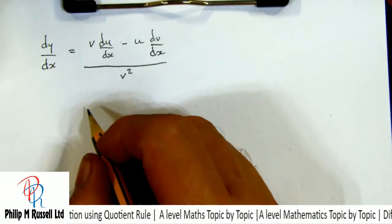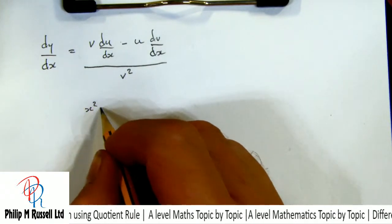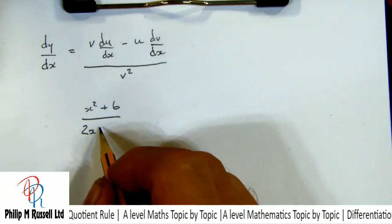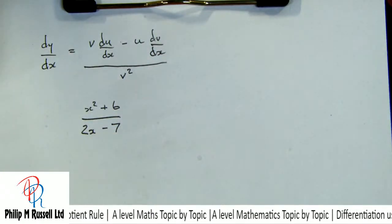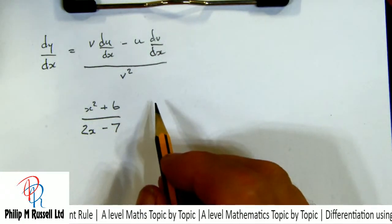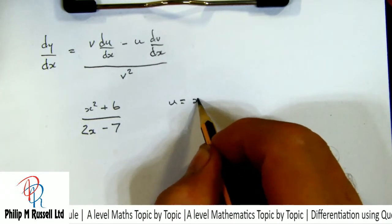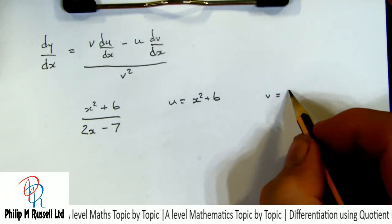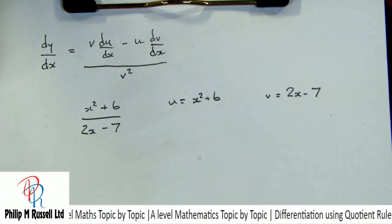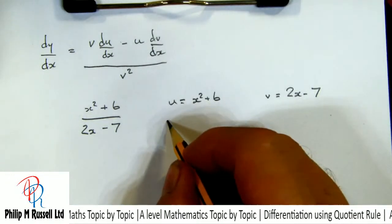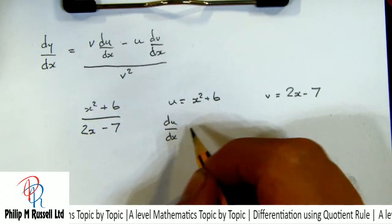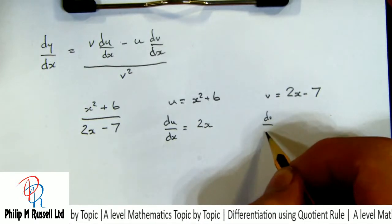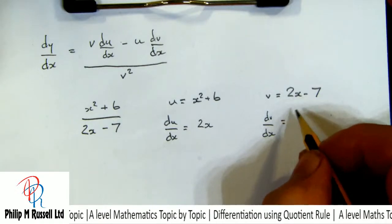Let's take something like (x² + 6) over (2x − 7). This is a quotient, so we make u equal to x² + 6 and v equal to 2x − 7. Differentiating each of these: du/dx is 2x, and dv/dx is 2.